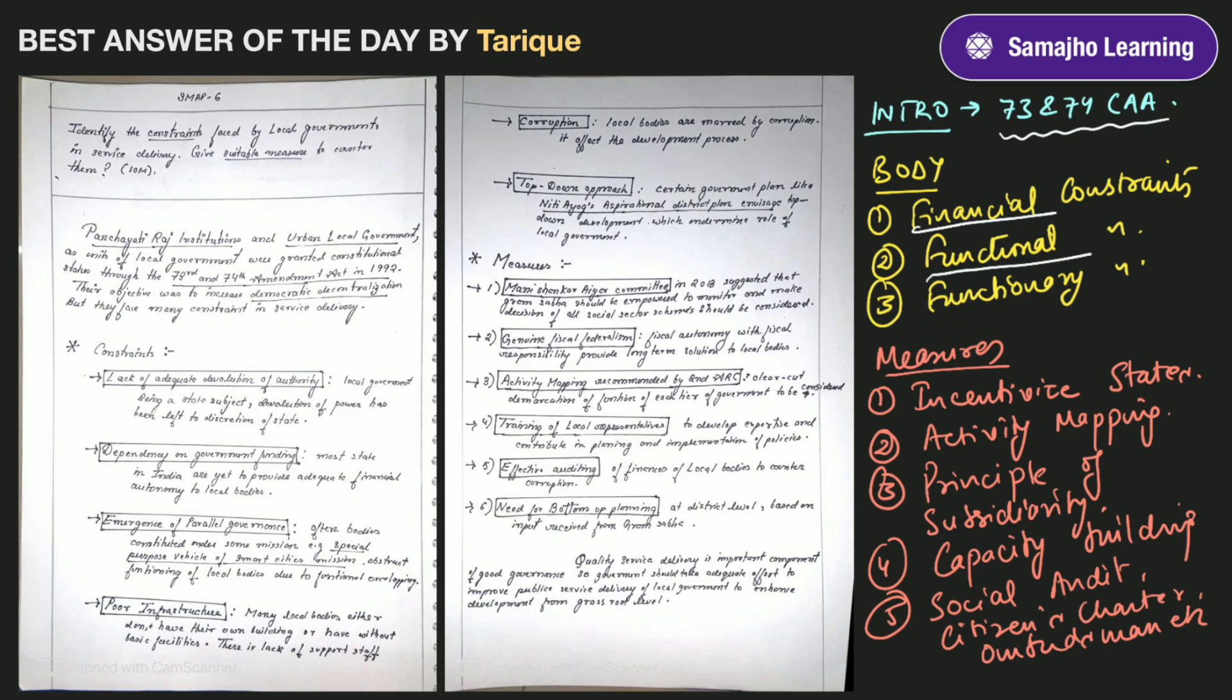The state government has a lot of supreme power as compared to the local bodies at the grassroots level. State governments have powers so many times they have special purpose vehicles. In smart cities, for example, there is a specific task force which has powers and functions parallel to the local bodies and overlaps.